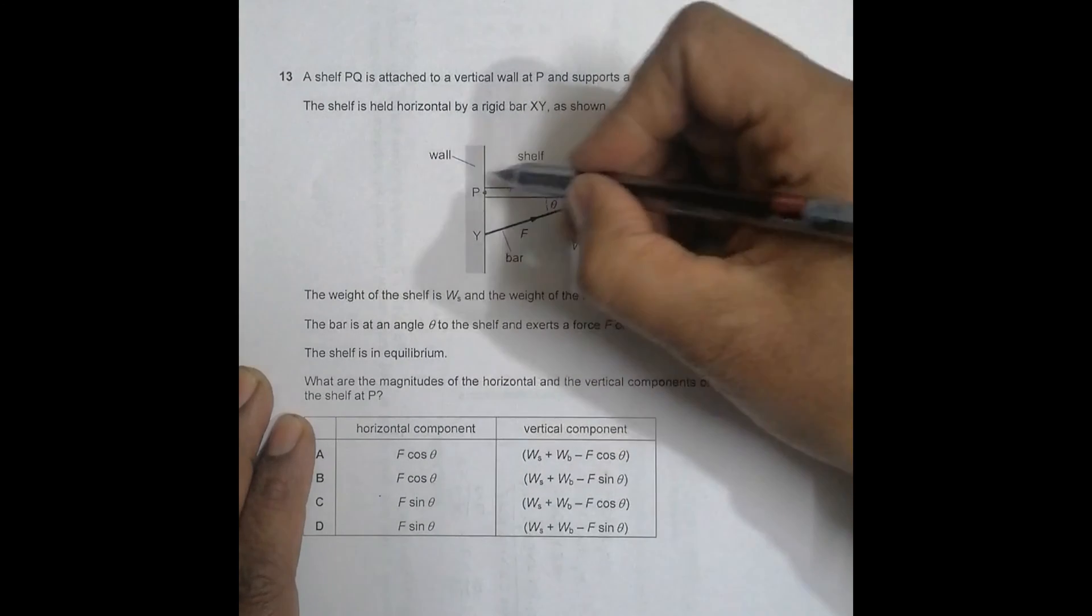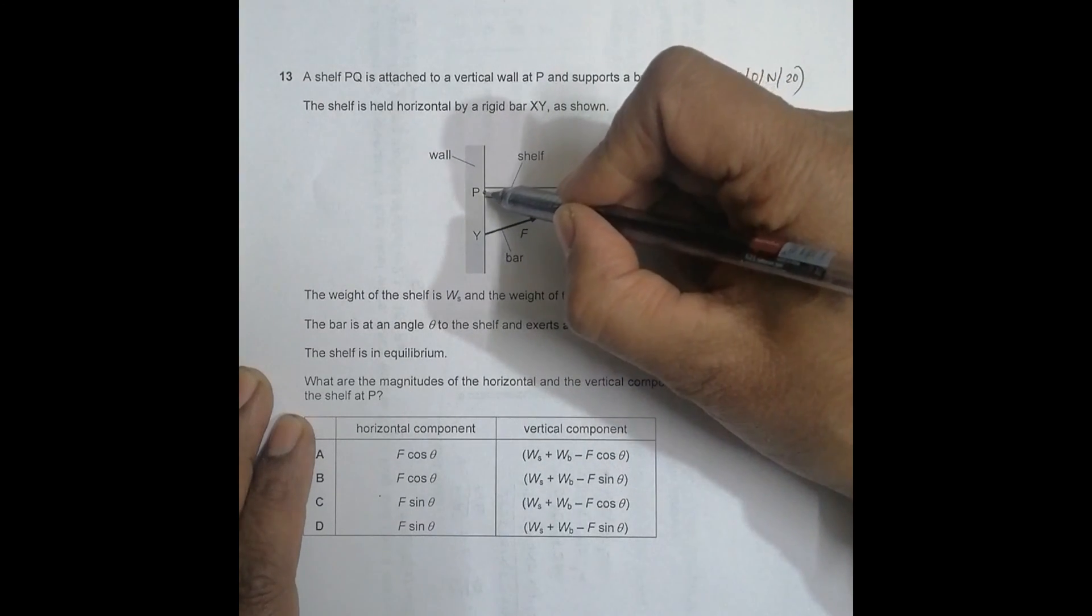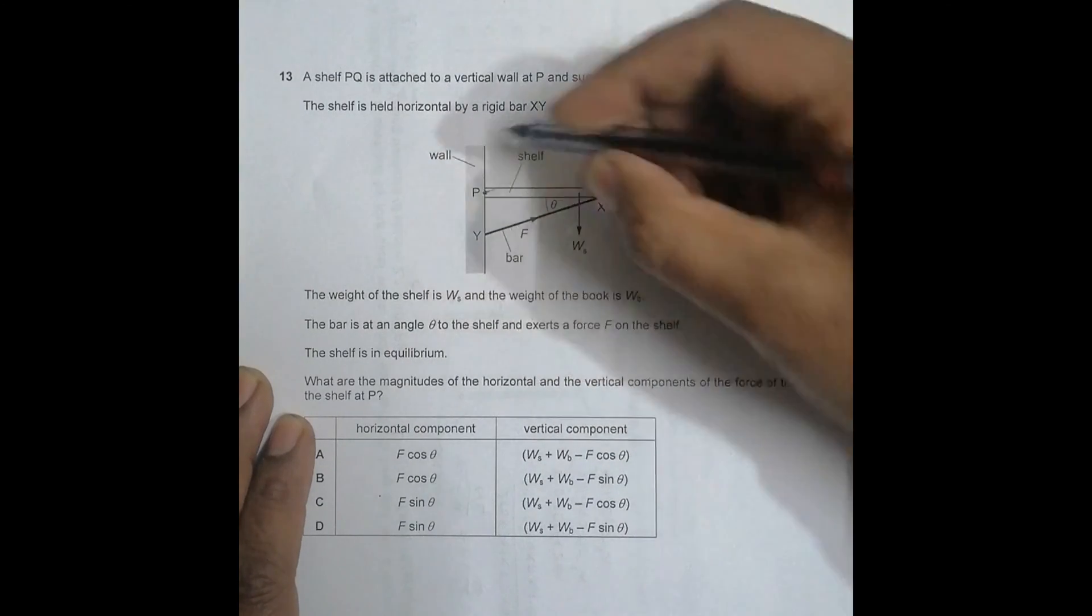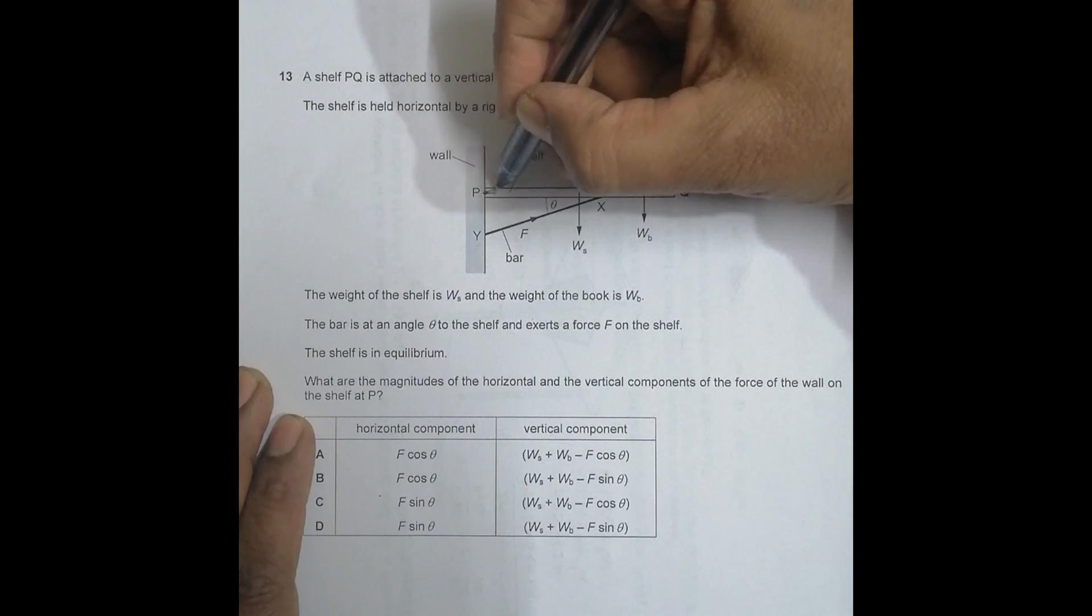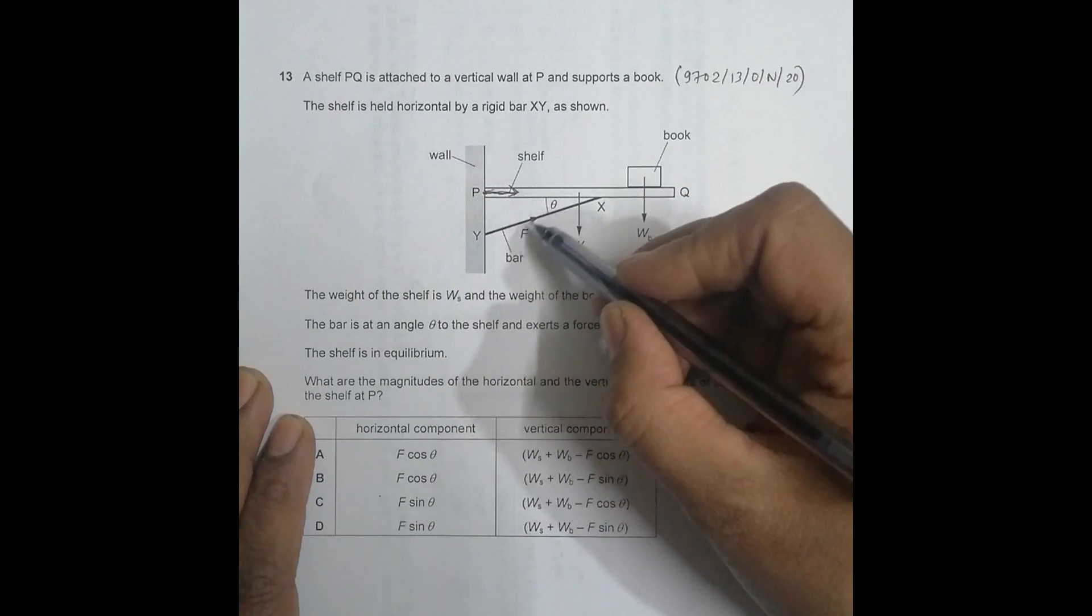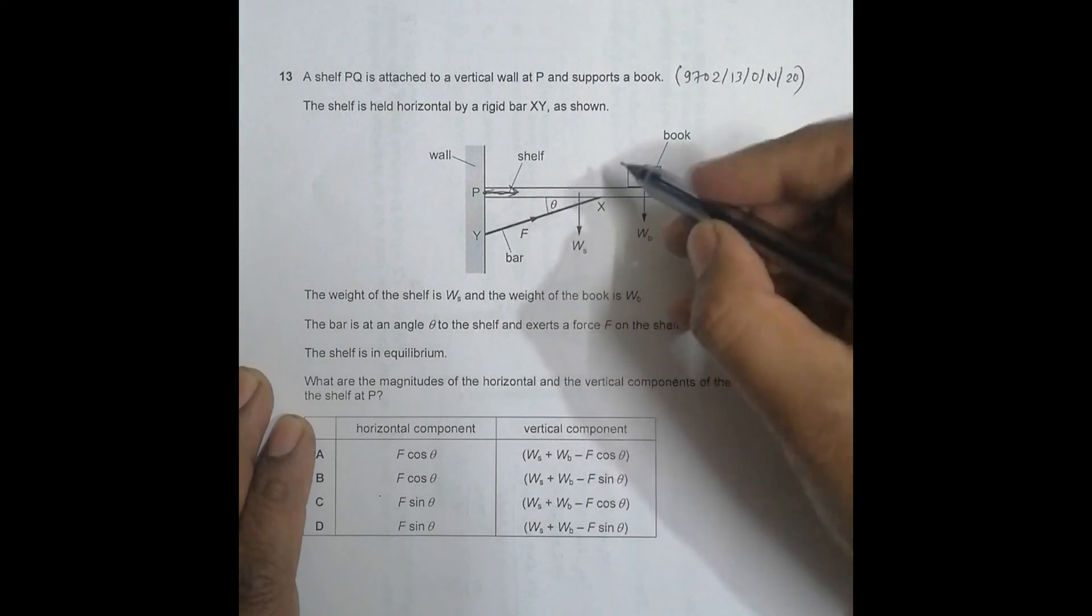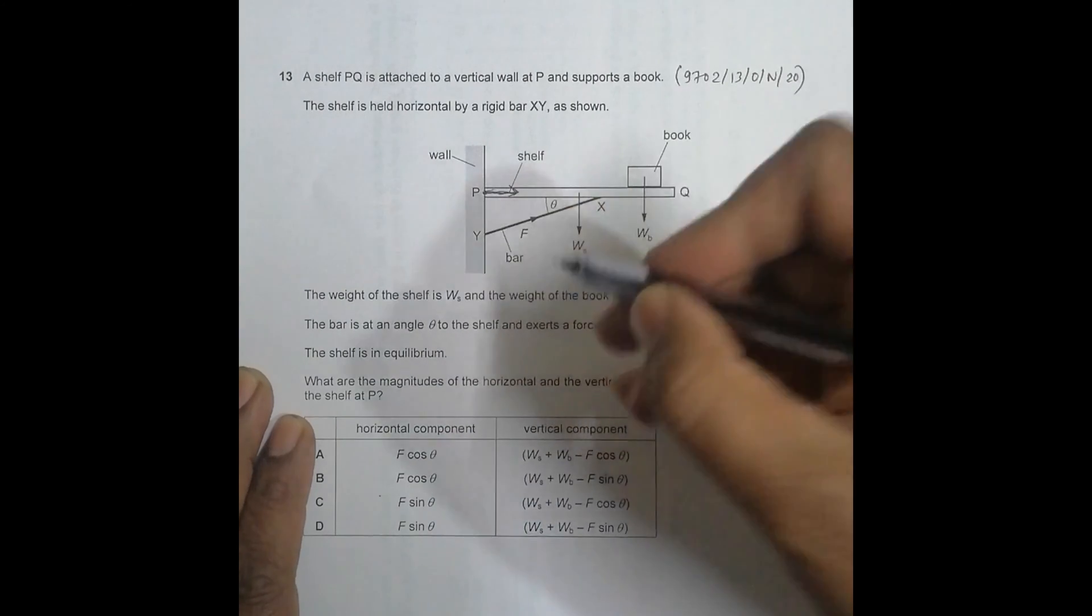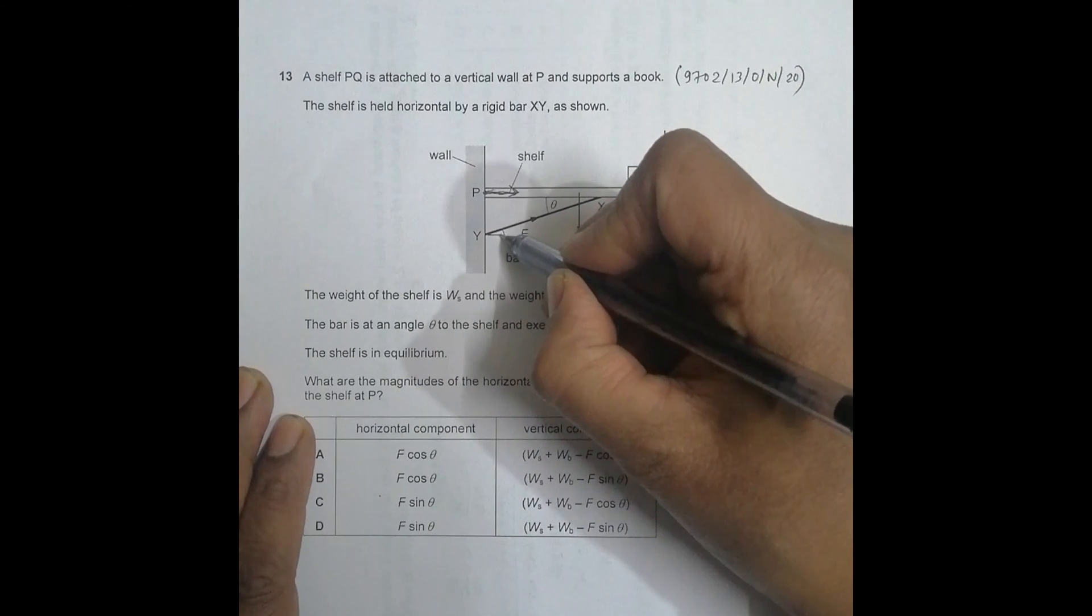The first thing is the horizontal component. This force will be in this direction. Since we have F here, the horizontal component will be somewhat like this. This will be the horizontal component.